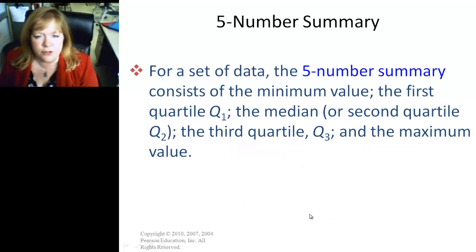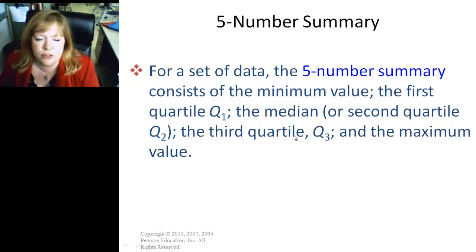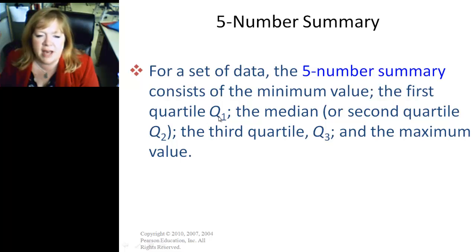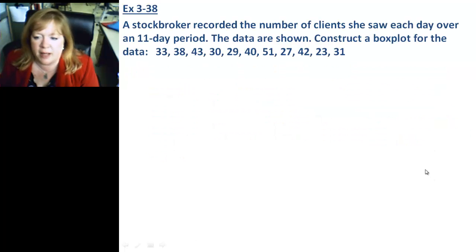A five-number summary just talks about the five numbers you use to create a box plot: the minimum value, quartile 1, the median, quartile 3, and the maximum value. You find those five numbers and do your box plot. Easy.